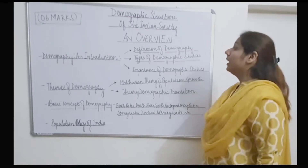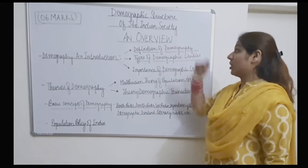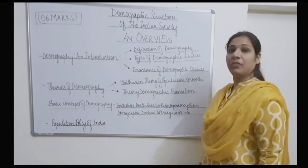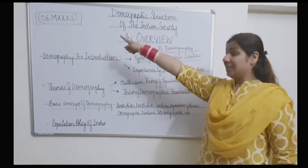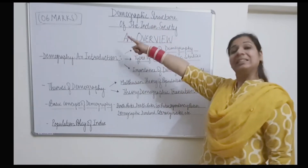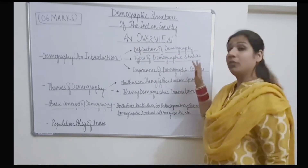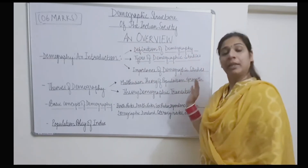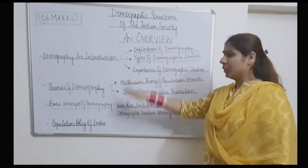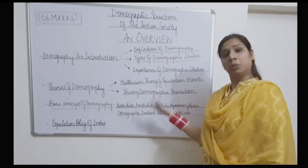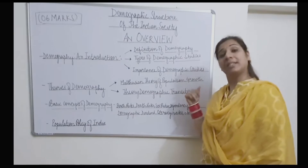Good morning everybody. In this lecture I am going to discuss the chapter 'Demographic Structure of the Indian Society.' This chapter carries six marks in the CBSE board examination. We will start with an overview of the chapter — the major headings and basic sub-themes that we will discuss in detail in forthcoming lectures.